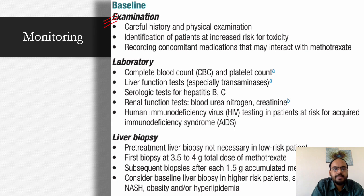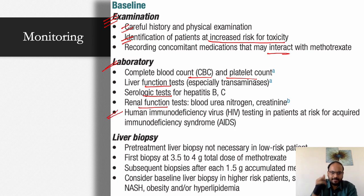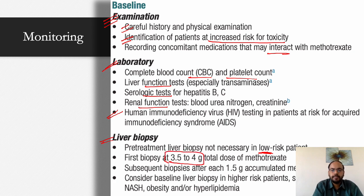Monitoring begins with careful history and physical examination. Identify increased-risk patients (obese, chronic alcohol use) and record concomitant medications. Pre-treatment labs include CBC, platelet count, LFTs, KFTs, serological tests, and viral screening for hepatitis B, hepatitis C, and HIV. Liver biopsy is not indicated in low-risk patients. In high-risk patients (NASH, obesity, hyperlipidemia, chronic alcoholism), consider liver biopsy. First biopsy at a cumulative dose of 4 grams, then every 1.5 gram increment.